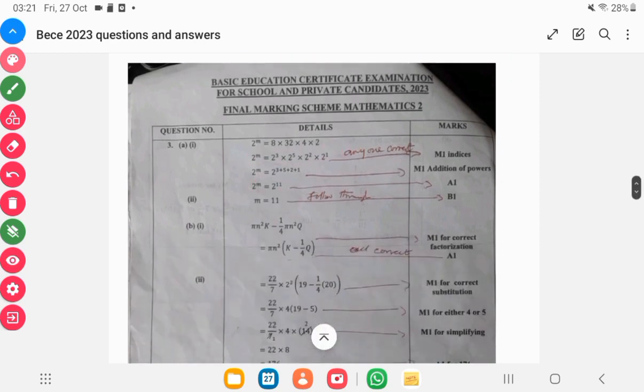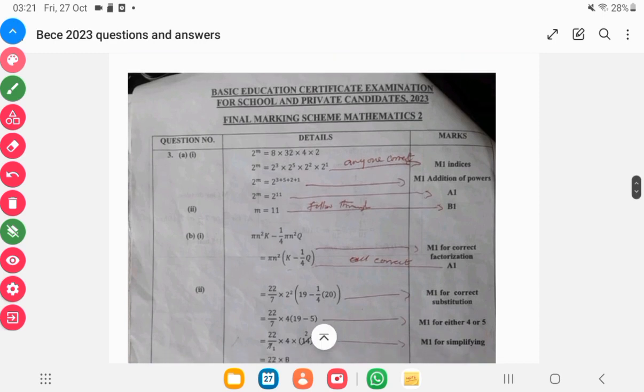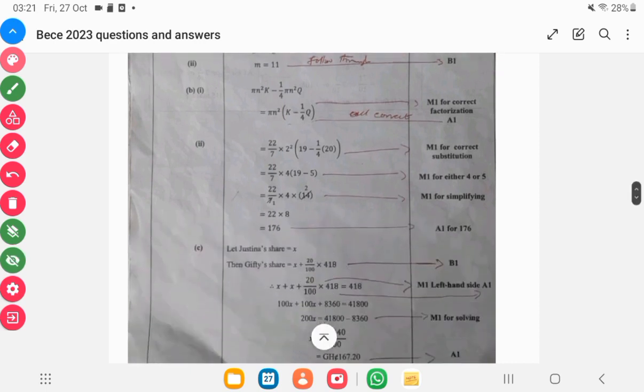Then the factorization—you have your pi and your n squared outside. So that is your factorization for you. Then later on, the substitution was done, substituting each variable.